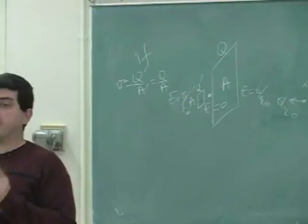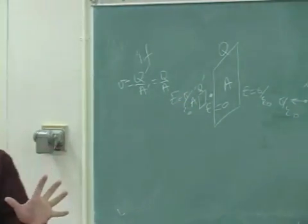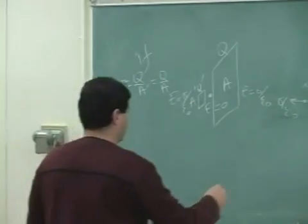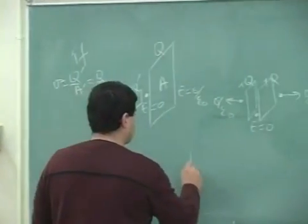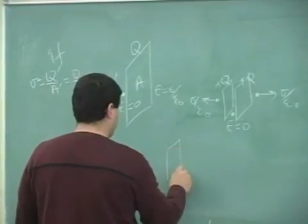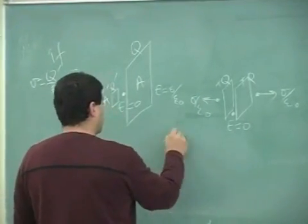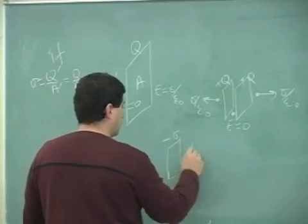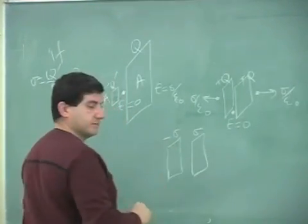Now, if you have the opposite situation — two plates that are oppositely charged, with surface charge densities of negative sigma and positive sigma — then the electric field configuration changes.